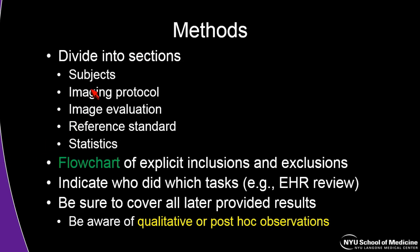The methods section will have subsections covering subjects, imaging protocol, image evaluation, reference standards, and statistics. Typically it includes a flow chart of explicit inclusions and exclusions — Radiology typically requires that as figure one. Indicate who did which tasks, including who did chart reviews and what their role was. Be sure to cover all the later results you provide, especially qualitative or post hoc observations. Details are important — avoid the trap of having placeholder text like 'insert statistical method here' accidentally make it through to publication.